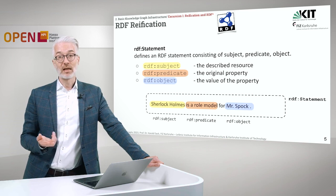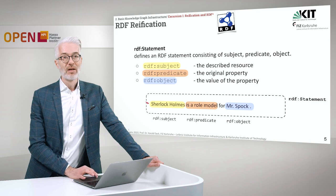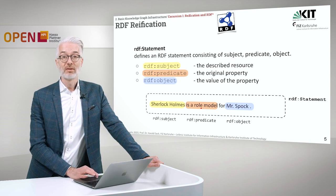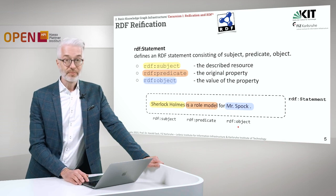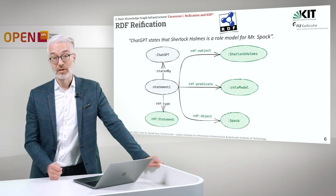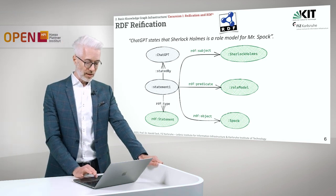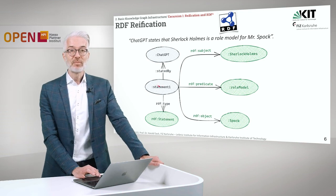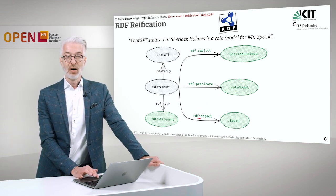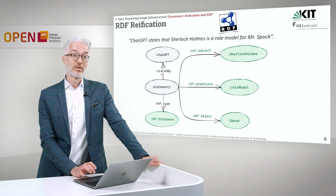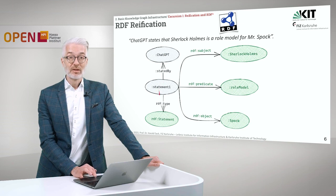What we have to do is create an RDF statement with Sherlock Holmes as the RDF subject, is-a-role-model as the RDF predicate, and Mr. Spock as the object. Looking at the according RDF graph, we have Statement 1 with subject Sherlock Holmes, predicate role model, and object Spock. This is connected to ChatGPT via the property stated-by, so Statement 1 was stated by ChatGPT. And of course Statement 1 is of type RDF statement.